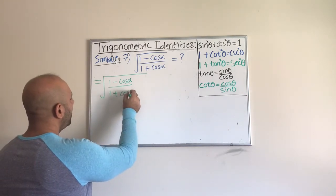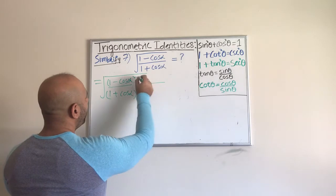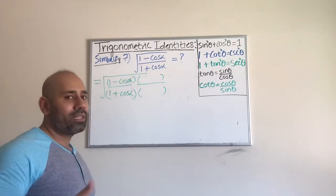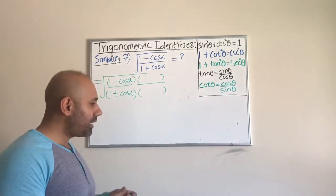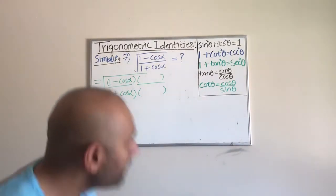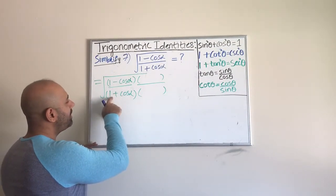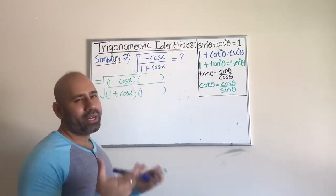And then the downstairs I have 1 plus cosine alpha. So the rationalizing process works like this: you multiply upstairs and downstairs by a common quantity, because we cannot actually change this expression. So that common quantity, and let me use a different color for that, the common quantity is based on what the denominator is. So if the denominator is 1 plus cosine X, then we want to multiply by the conjugate of that, which in simple terms means if there's a 1 plus, then we will multiply by 1 minus cosine.